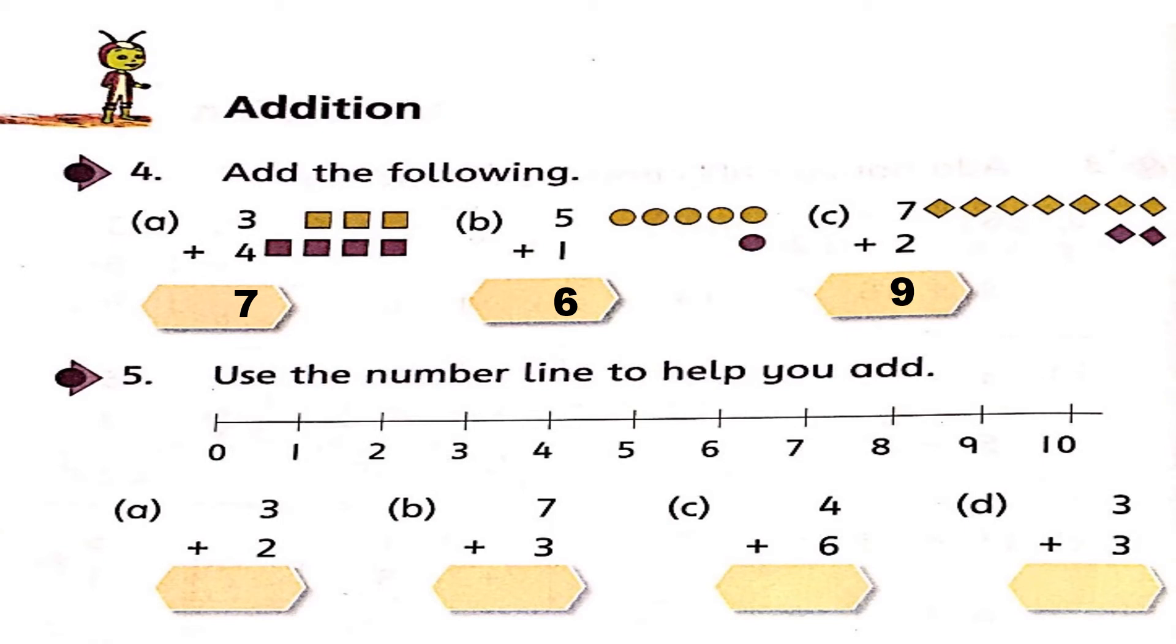Now, in question number 5, we will solve this addition with the help of the number line. In part A, question 3 plus 2. Bigger number is 3, so I am standing on number 3. Next number is 2, so we are going to add 2 numbers. We are going to jump 2 times: 1 time and 2 times. Now, we reach on number 5. So, answer we get 5.